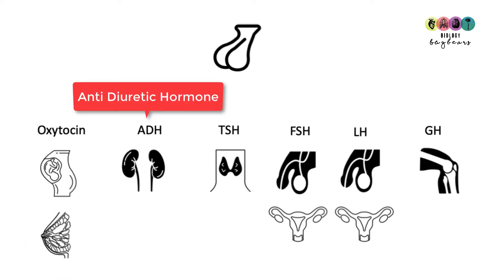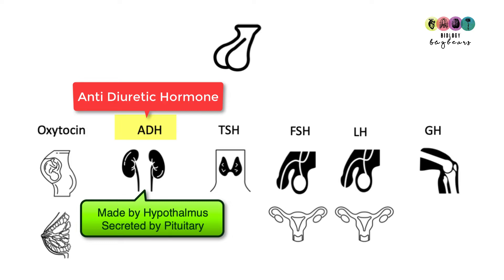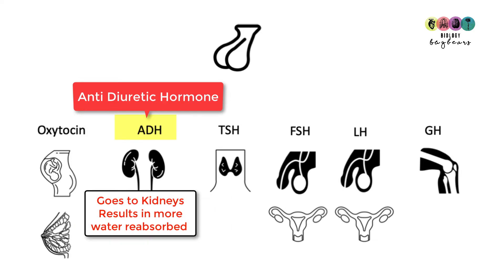Next is antidiuretic hormone, ADH. We learned about this in the chapter on the kidneys. ADH is made by the hypothalamus but is sent to the pituitary gland, from where it is secreted. It is secreted when the body needs to conserve water. In that case, it travels in the blood to the kidneys, where it is involved in water reabsorption.